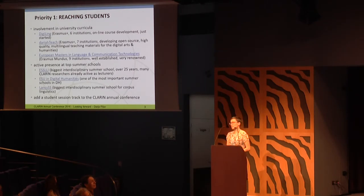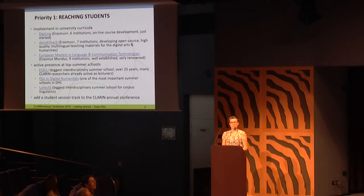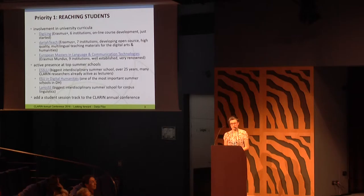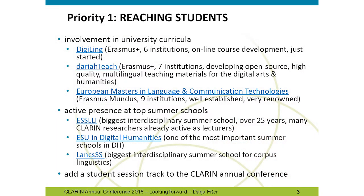I would like to show you the three priorities I have selected for my term. I would like to focus in particular on education and training — first of students, then early stage researchers, and finally the educators, teachers, and supervisors of these students and researchers. In terms of targeting students, I would like us to be better involved in university curricula. There are several Erasmus Plus projects already developing university curricula for digital humanities and social sciences, and there are some European masters that we could try to be more present at.